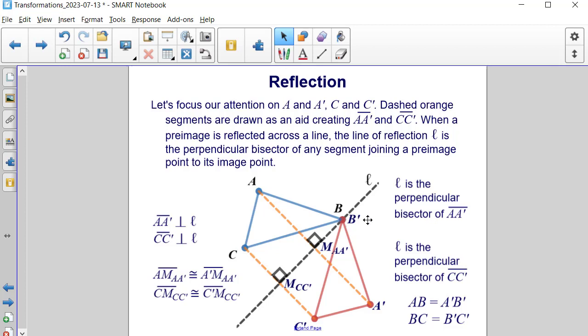And L is that perpendicular bisector of the segment from A to A prime, and it's also the perpendicular bisector of the segment C to C prime. And since it's the perpendicular bisector, it splits each of these new segments that are created into two congruent halves.